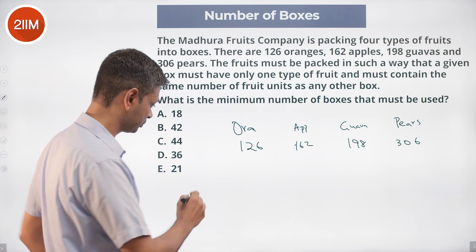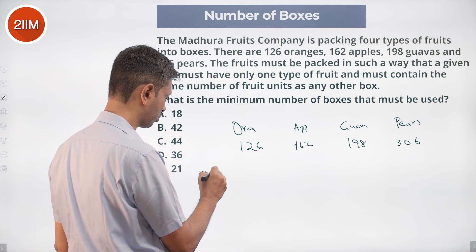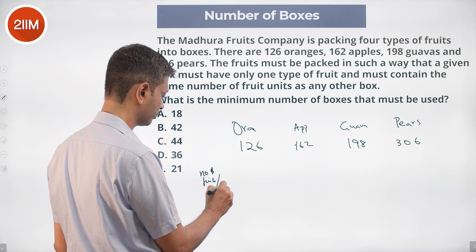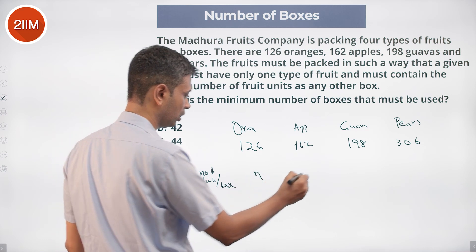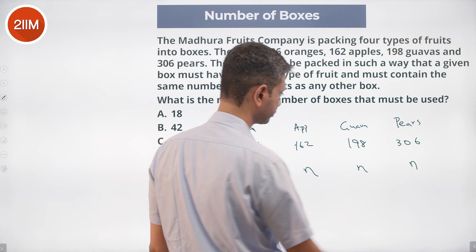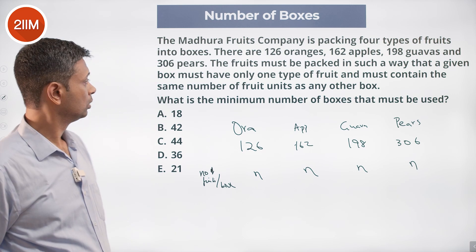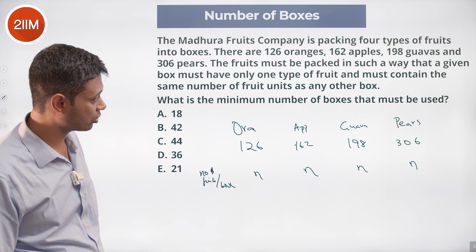So the number of fruits per box is N for each type. What is the minimum number of boxes that must be used?